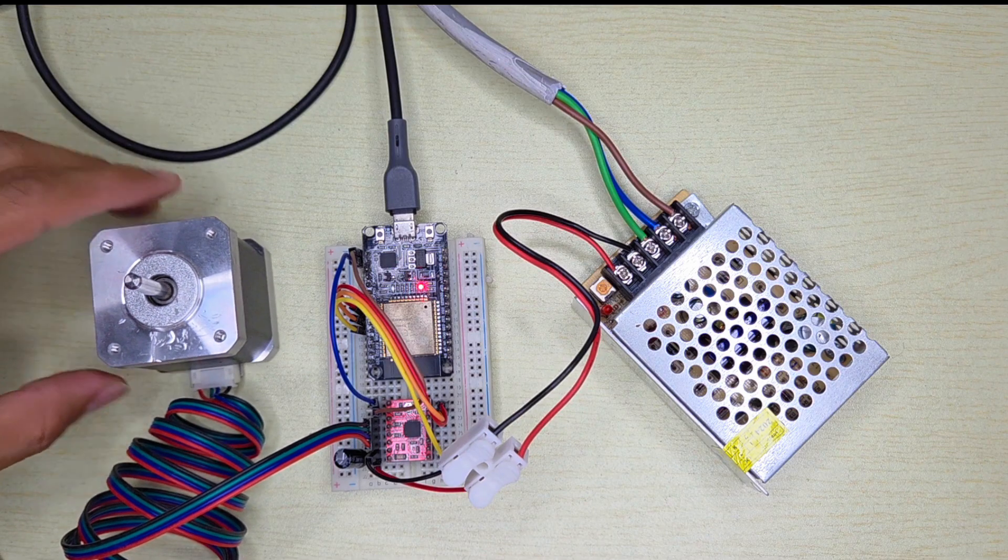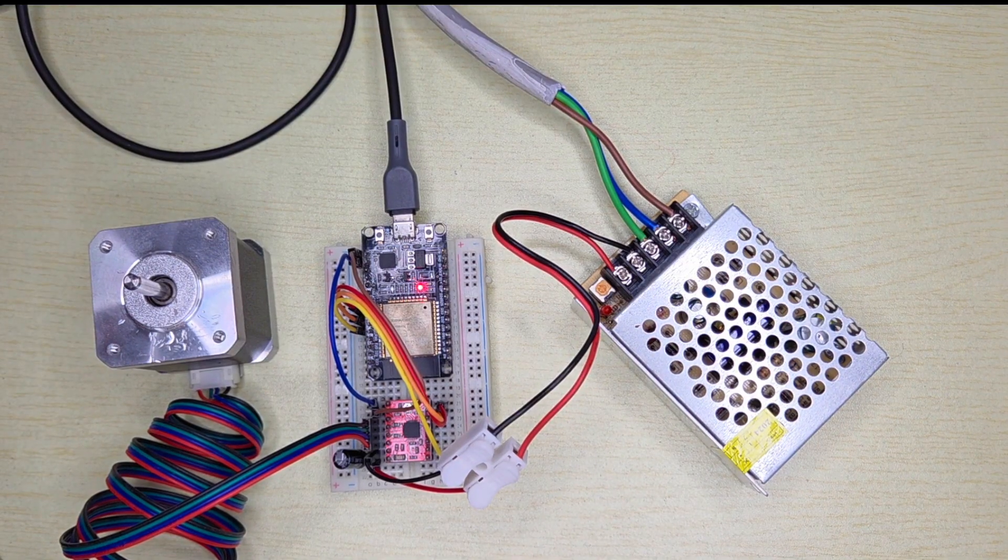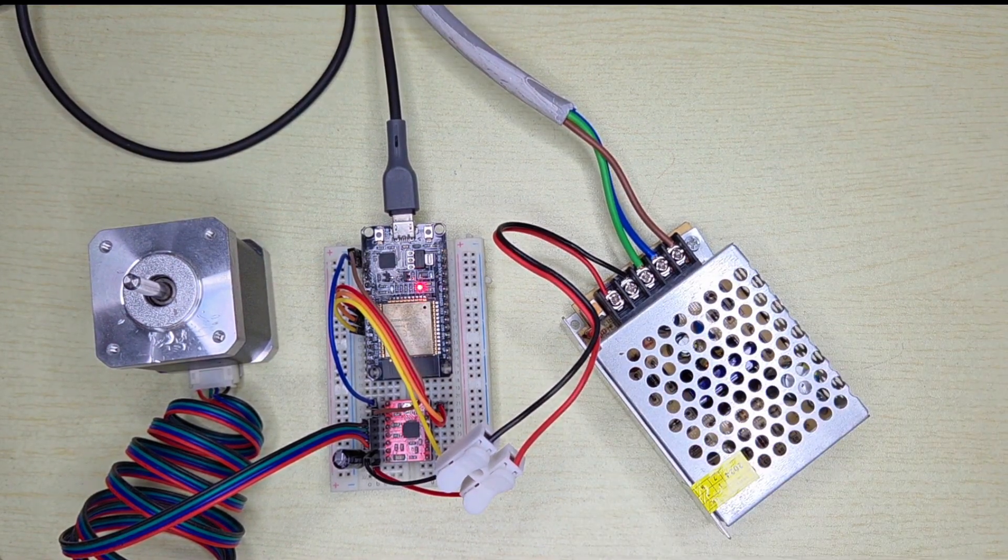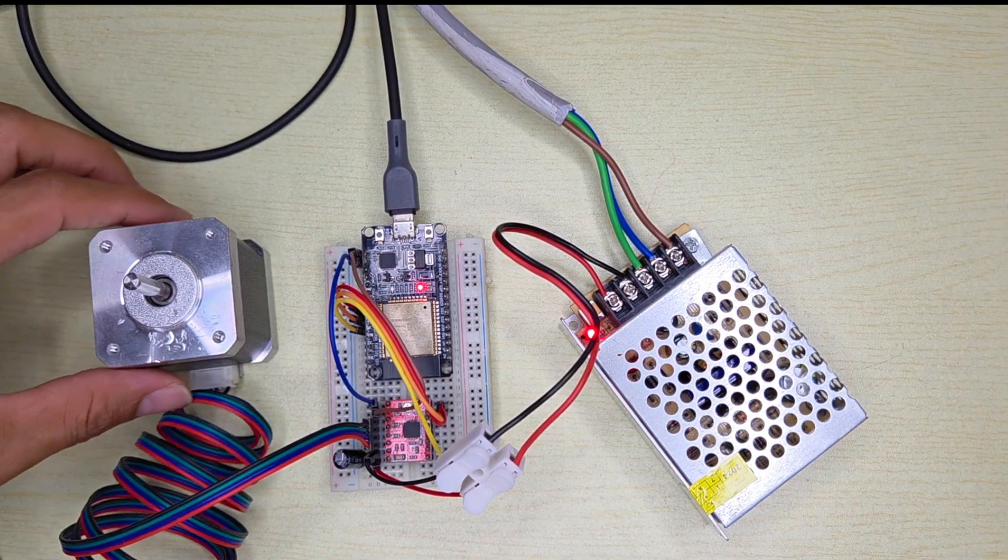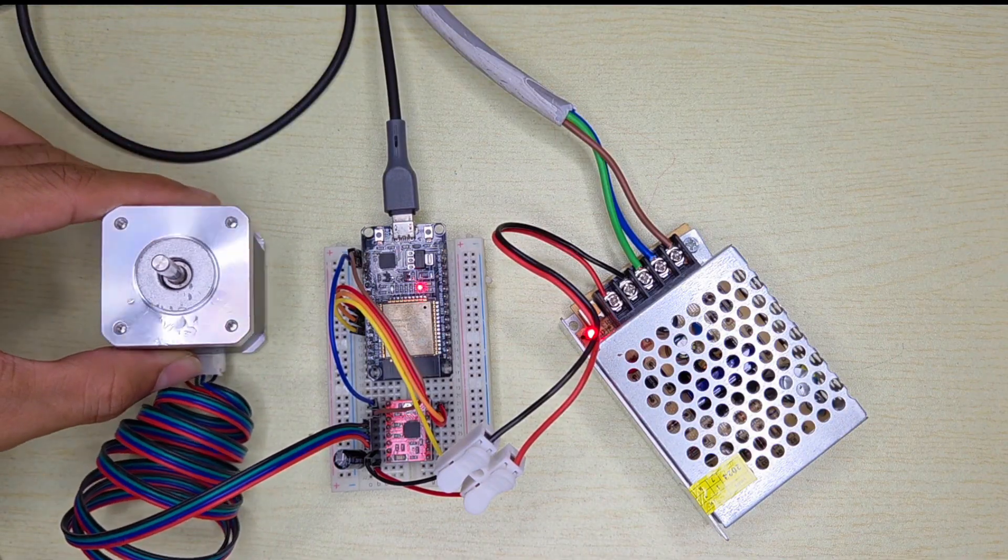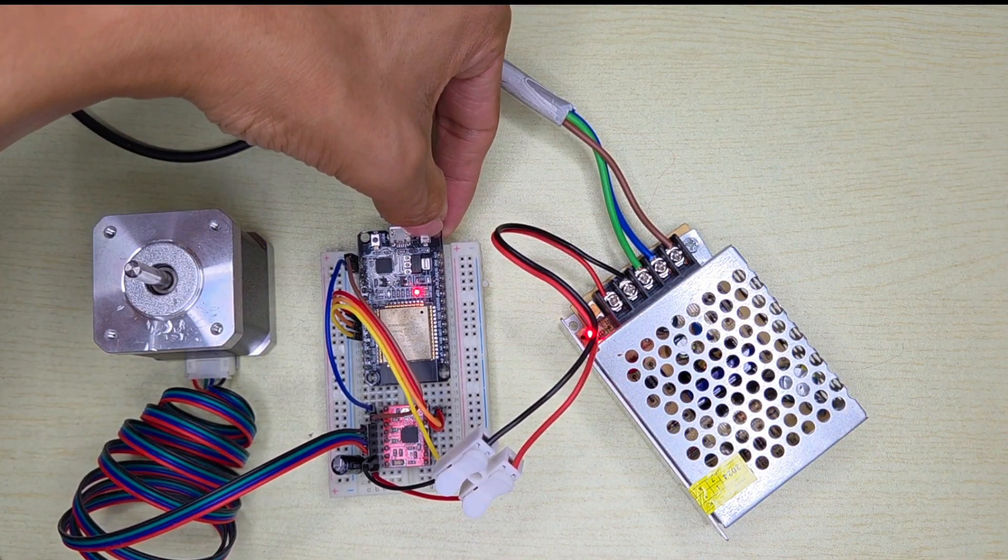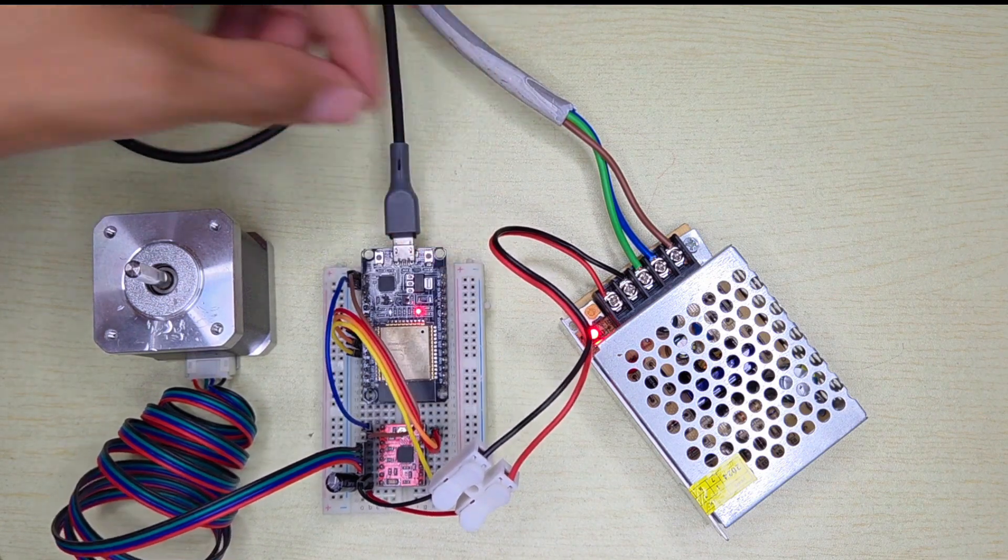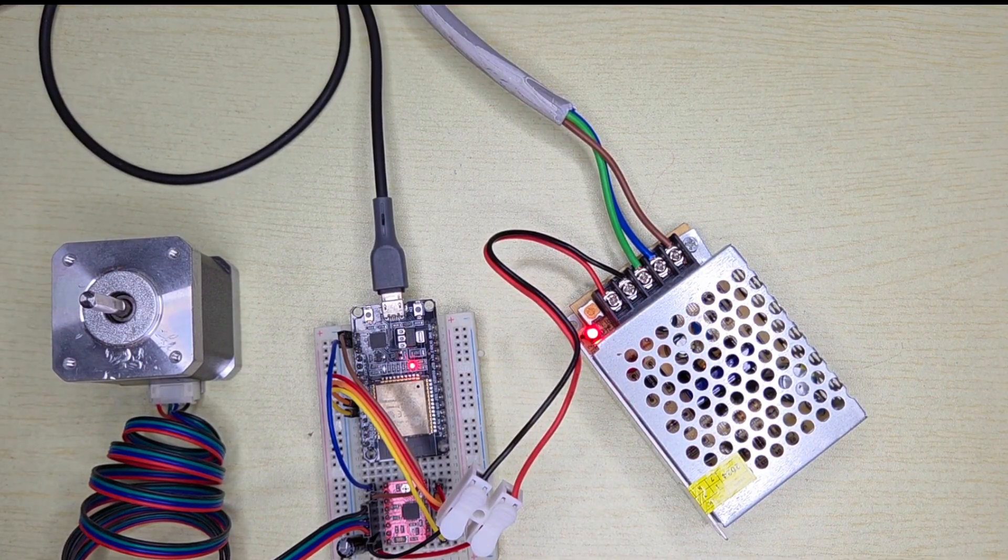The code is already done uploading and we can power on. I'm going to power on the main switch. I already powered on and the stepper motor is not moving because I haven't pressed the enable button from ESP32. So I press right here.